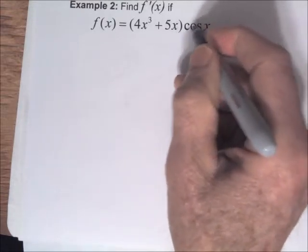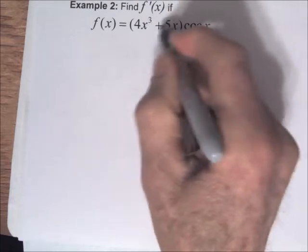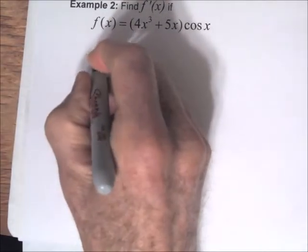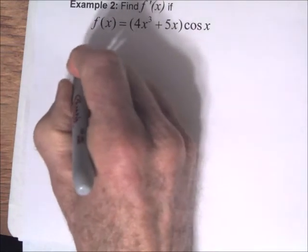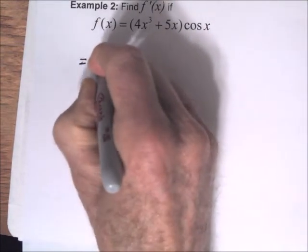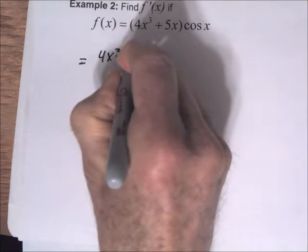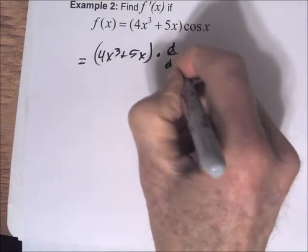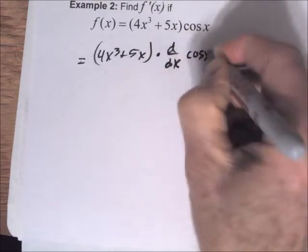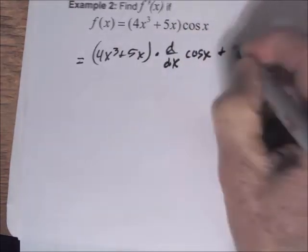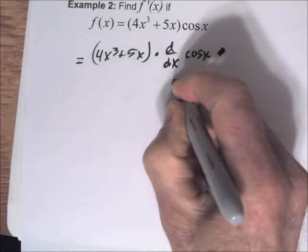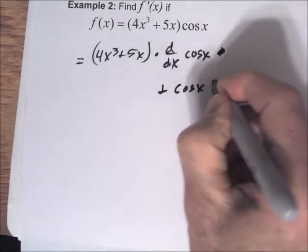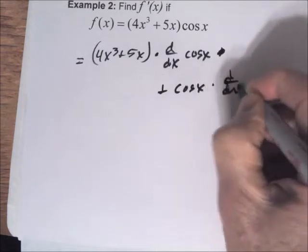We start with the product rule: first factor times the derivative of the second factor, plus the second factor times the derivative of the first factor. The derivative of cos x is −sin x. The derivative of 4x³ + 5x uses the power rule: 4·3x² + 5 = 12x² + 5.